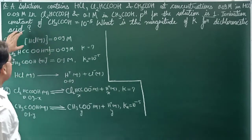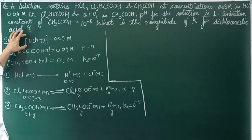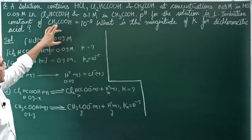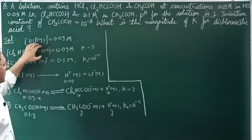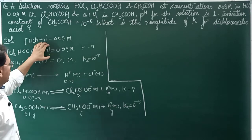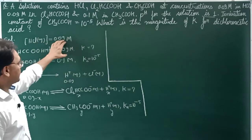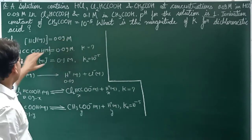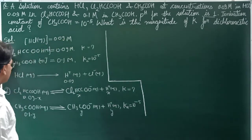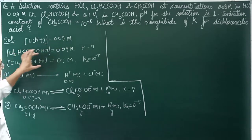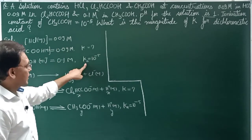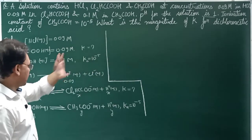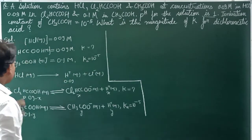Now, to set up the problem: HCl concentration is 0.09 M, Cl₂HCCOOH concentration is 0.09 M, CH₃COOH concentration is 0.1 M. K for Dichloroacetic Acid is K, and Ka for CH₃COOH is 10 to the power minus 5.